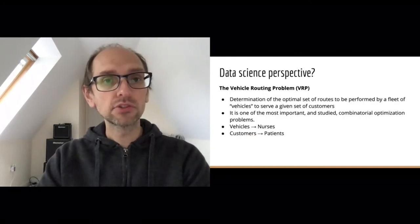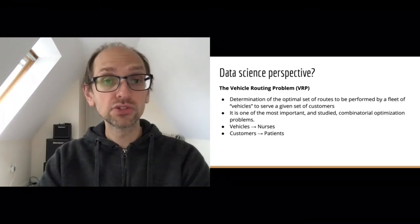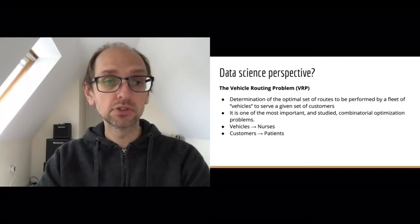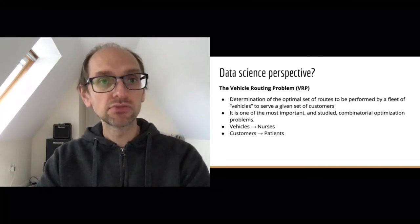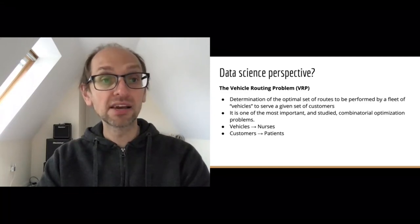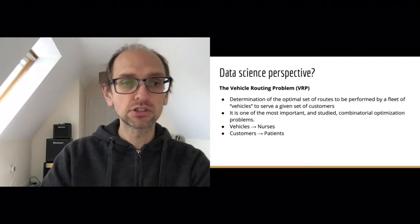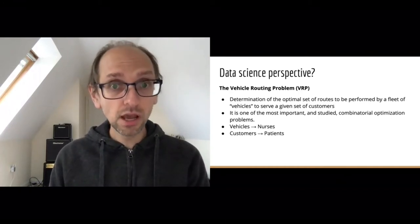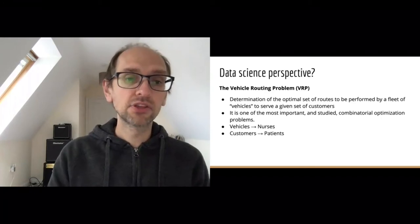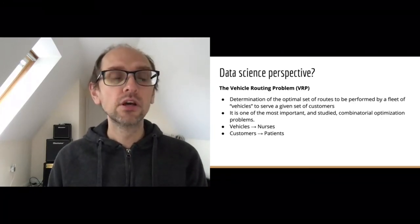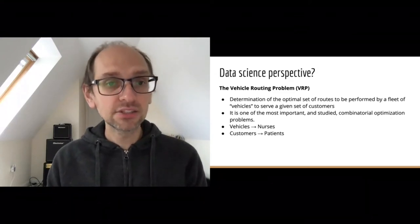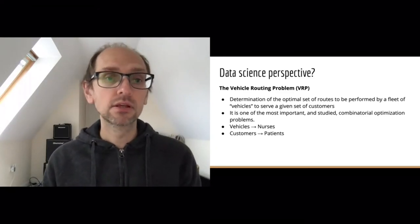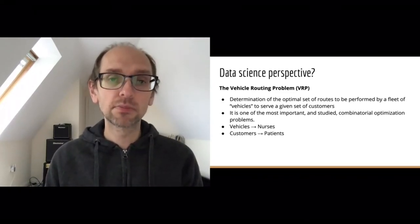The data science perspective on problems like this is to treat them as a vehicle routing problem, or VRP — one of the most famous combinatorial optimisation problems. It involves determining the optimal set of routes for a fleet of vehicles to serve a set of customers. Here the vehicles are nurses with varying skills, and the customers are the patients. This problem has been studied extensively; it's similar to Amazon package delivery, but in healthcare there's often a large number of constraints that must be taken into account.